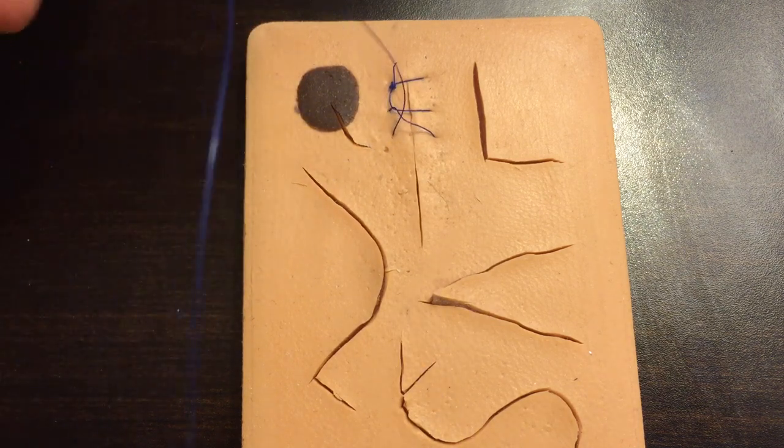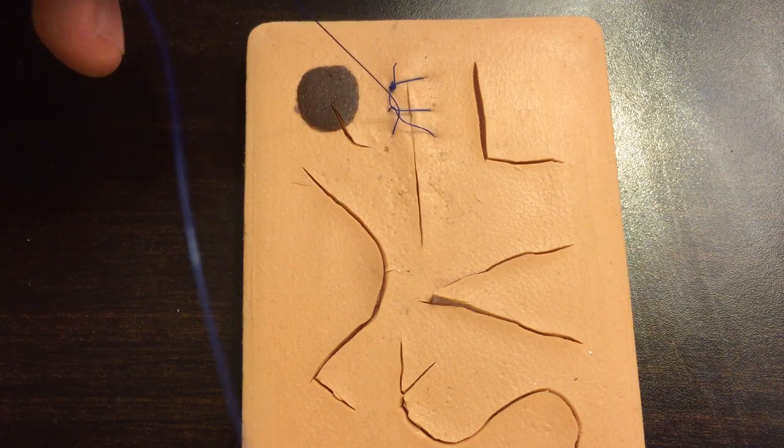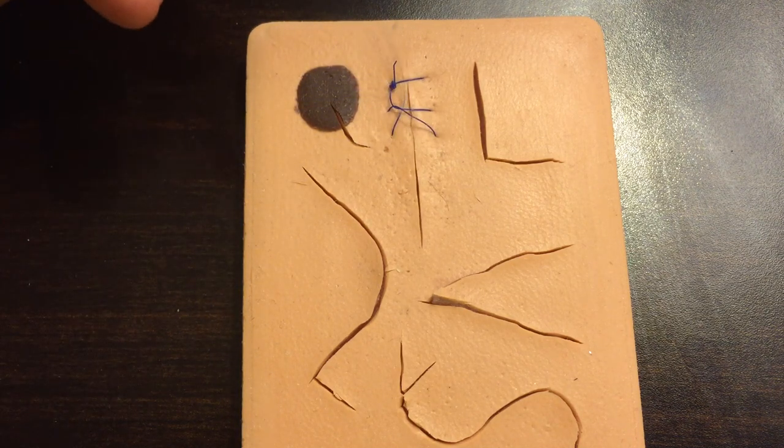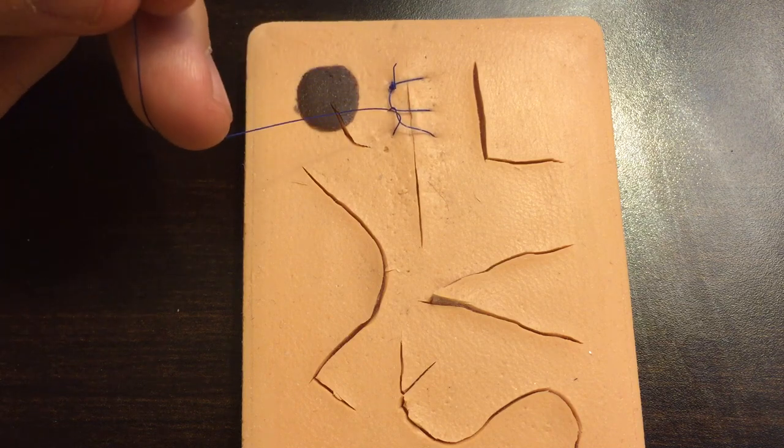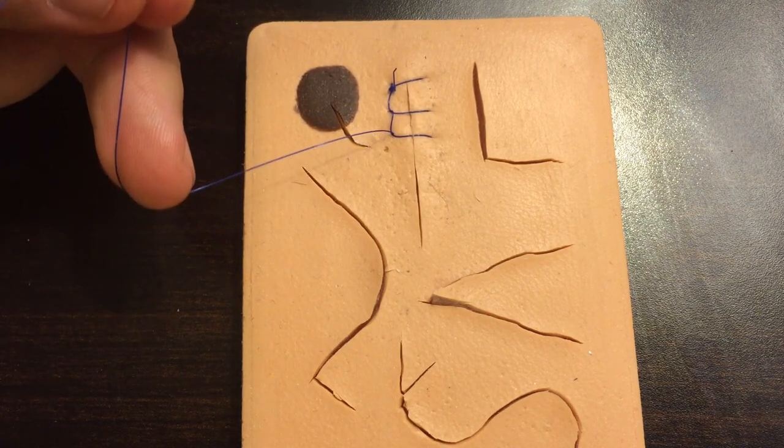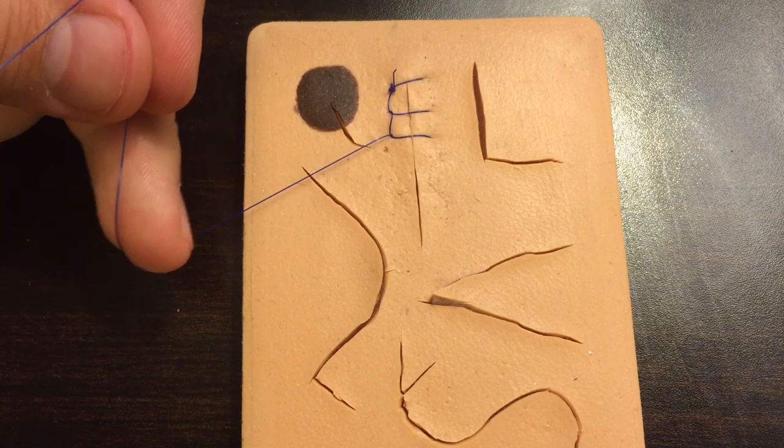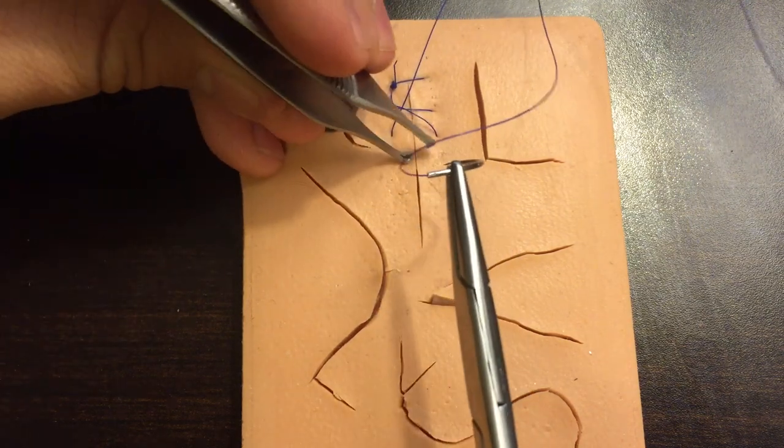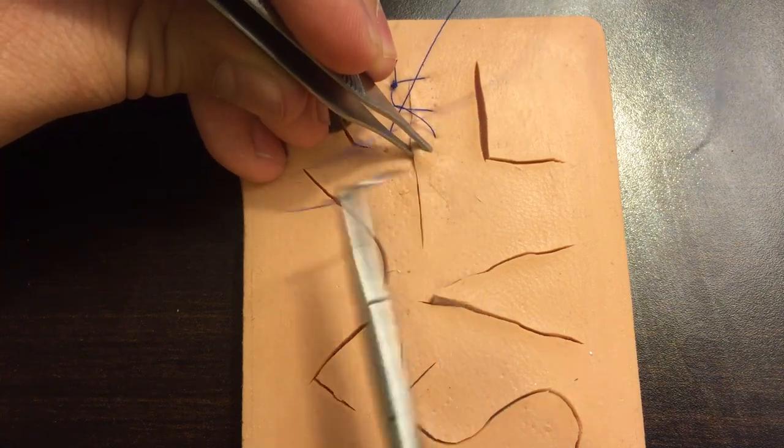Now, if you have another person helping you, for example, if you're in the operating room doing this, you might have a scrub tech or a nurse or another provider that can do what's called follow. Now they might follow by holding this tight for you while you throw the next throw. And that's nice because it just keeps it snug as you go, but when you're working by yourself, you got to let it loosen up a little bit.